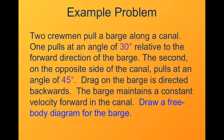Here's an example of a simple problem where we're going to make a simplified free body diagram. Picture this: we have two crewmen pulling a barge along a canal. One's pulling at an angle of 30 degrees relative to the forward direction of the barge. And the other one, who is on the opposite side of the canal, which it obviously has to be otherwise you're going to pull the barge into the side of the canal, he's pulling at an angle of 45 degrees. There's going to be some viscous drag on the barge backwards. The barge is going to maintain a constant velocity forward, which means that the net force is zero.